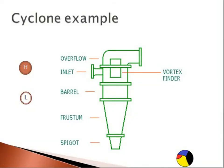Here we have a picture of a cyclone and the various parts of it are clearly identified. I've indicated a heavy particle and a light particle. The cyclone will preferentially separate the heavy particles from the light particles, and indeed the larger particles from the smaller particles.